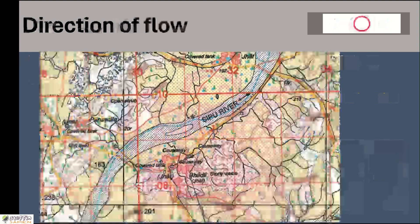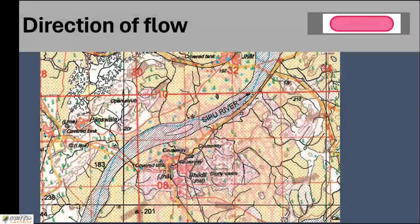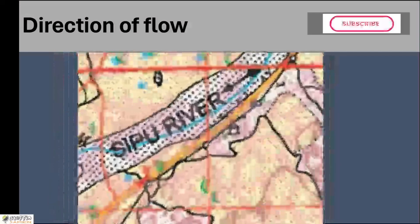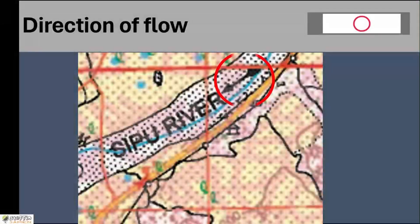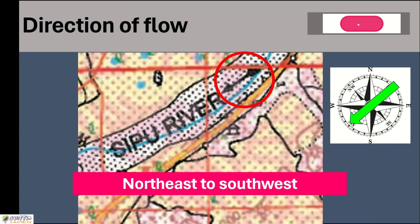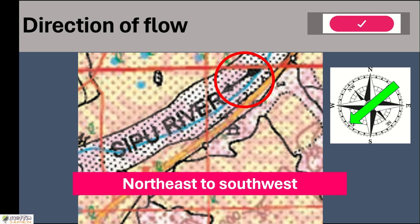Here we have a map with the main river in the middle. The question is: what is the direction of flow of the Sipu river? Here, very close to the name, we have an arrow showing the direction of flow. Once we have the arrow, we just look at the direction the arrowhead is pointing — the direction to which the river is flowing. We can then write that the stream is flowing from northeast to southwest.